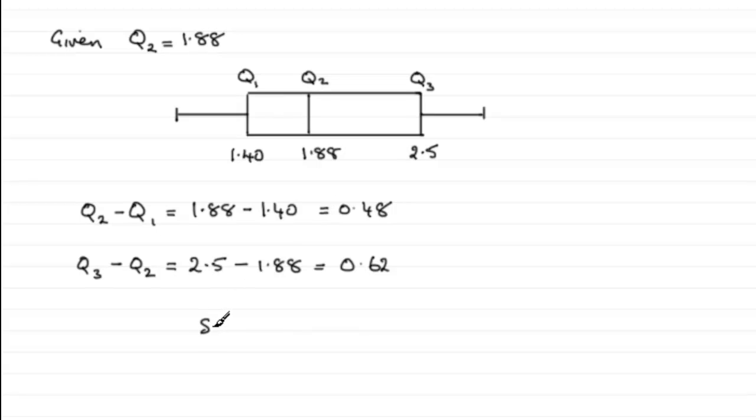I would say that since Q3 minus Q2 is greater than Q2 minus Q1, then we've got positive skew.